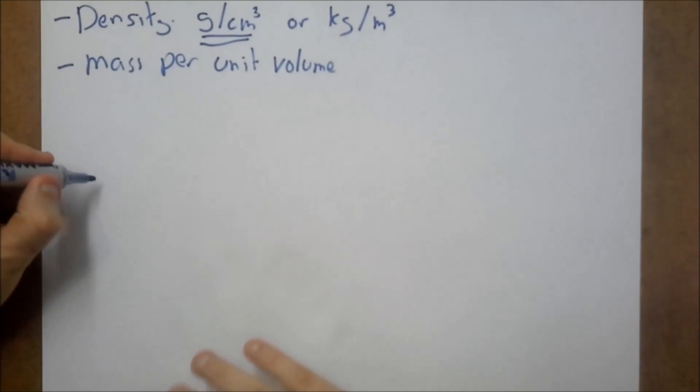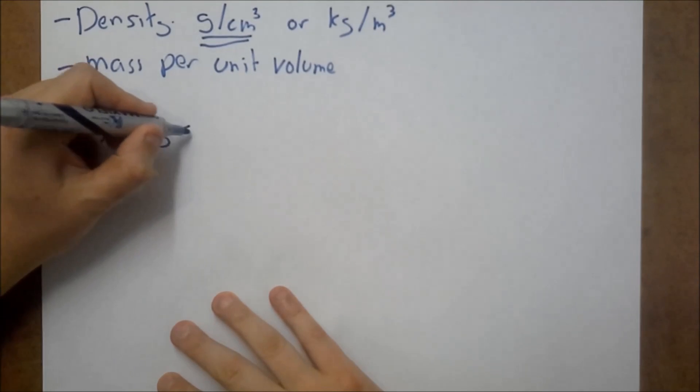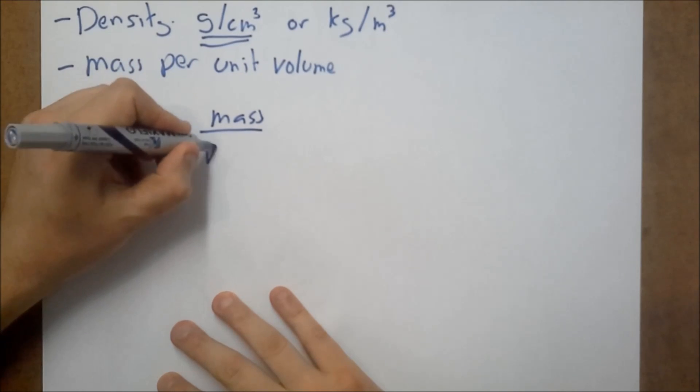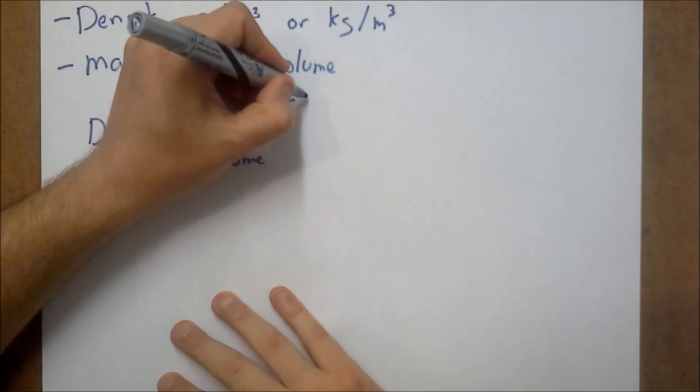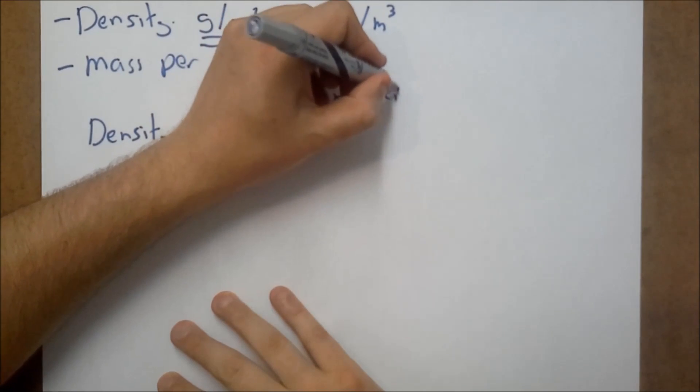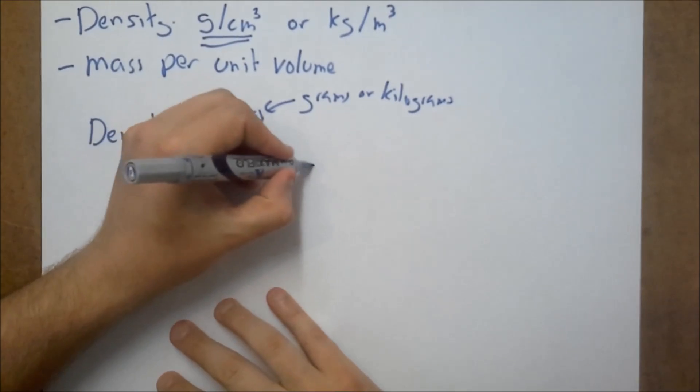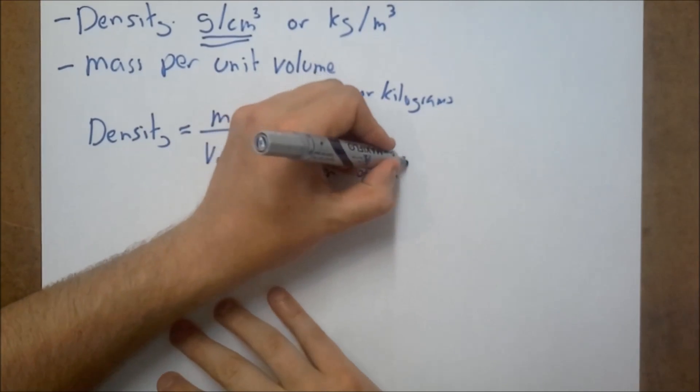So, how do we work out density? It's equal to the mass divided by volume. Now mass, it could be grams or kilograms. Volume, it could be centimeters cubed or meters cubed.